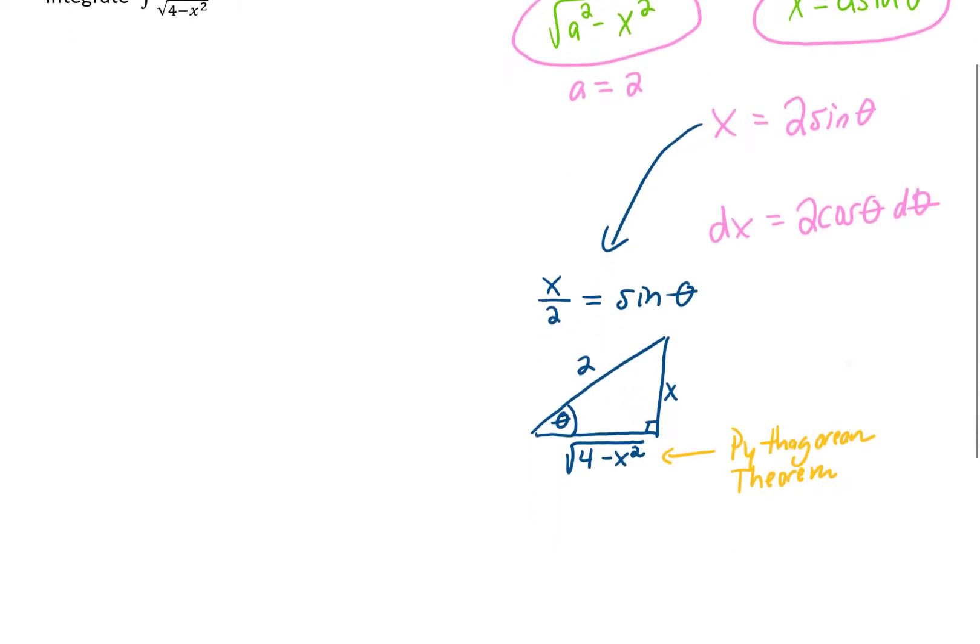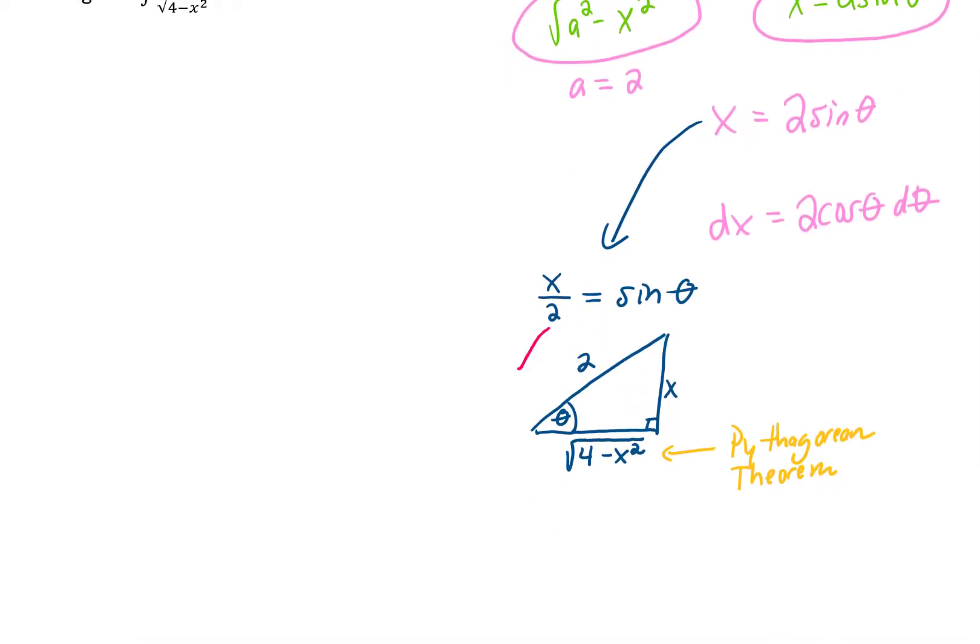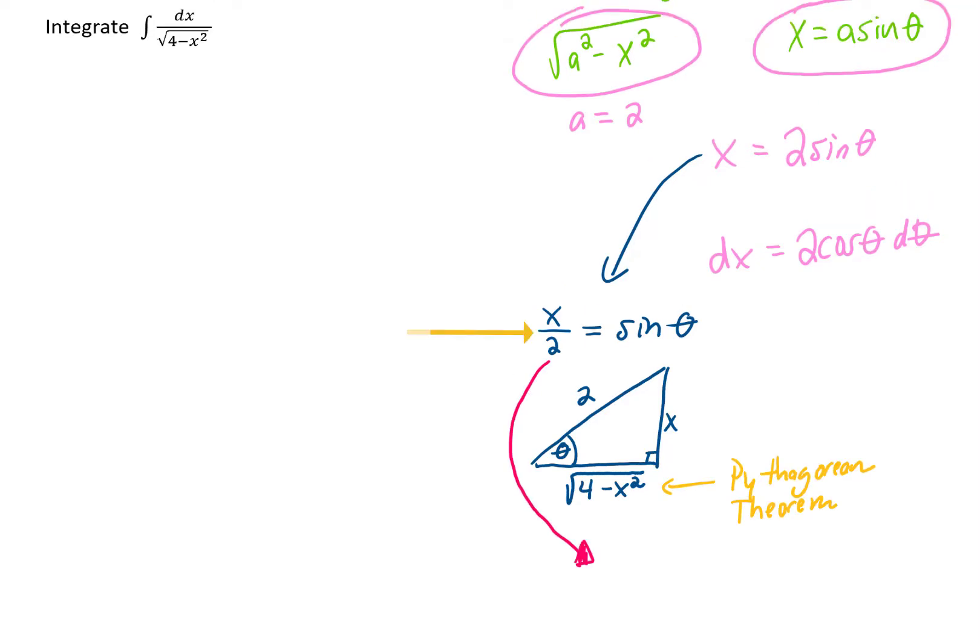And as if I haven't given you enough preliminary information before we even start solving this problem, I will tell you one more thing that we might use. This equation right here can be solved for theta if we take the inverse sine of both sides of that equation. In other words, theta can be written as the inverse sine of x over 2.